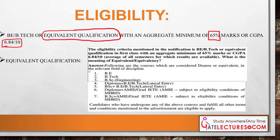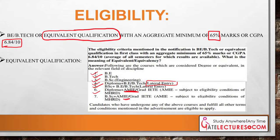Equivalent qualifications include: BE (Bachelor of Engineering), B.Tech, BSc in Engineering, Diploma plus B.Tech with lateral entry, BSc plus BE with lateral entry, Diploma plus AMIE, or BSc plus AMIE. AMIE is for students who have done a diploma. Any student who has undergone one of these courses and fulfills all other conditions mentioned in the attachment is eligible to apply.